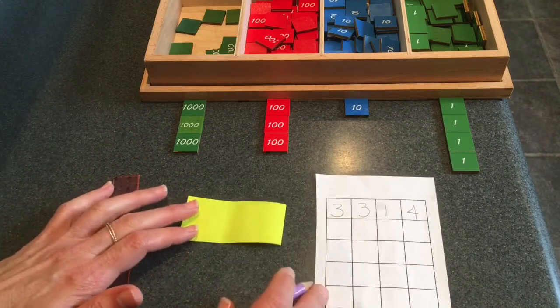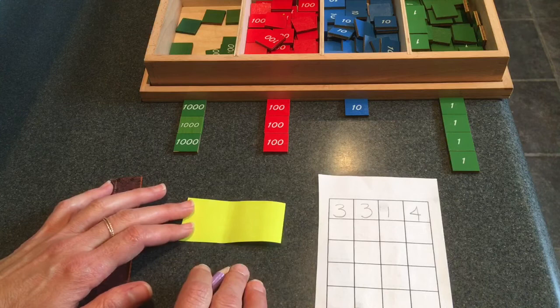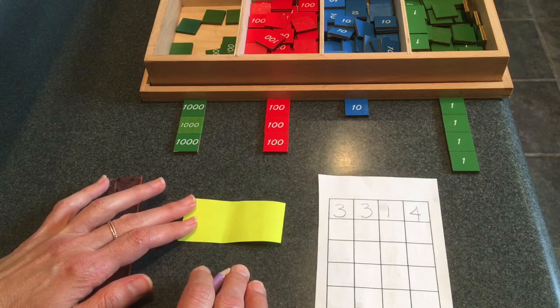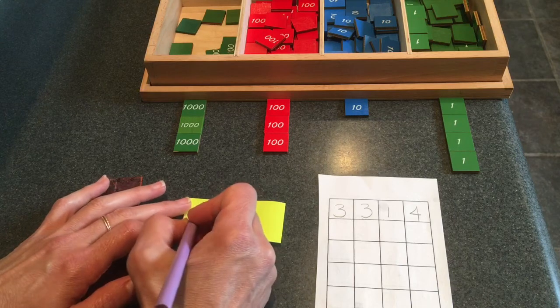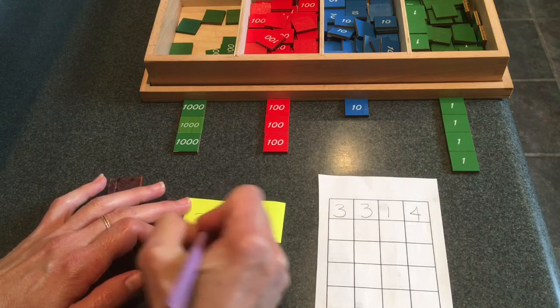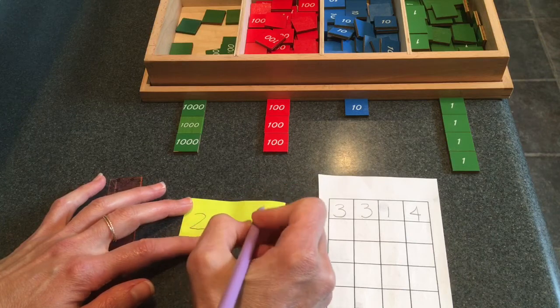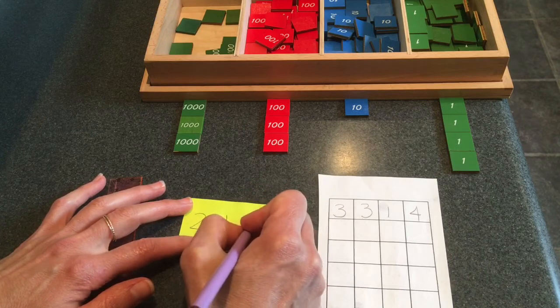I'm going to write my subtrahend, the number that I'm taking away, on my half post-it note. Let's see, I want to take away 2,133.